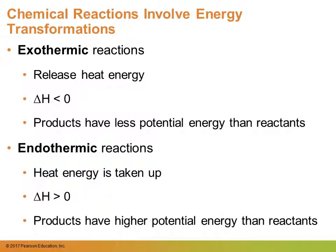That brings us to two types of chemical transformations: exothermic and endothermic reactions. Exo means to exit and thermic means heat, so an exothermic reaction releases heat. When it releases heat, delta H decreases — it becomes less than zero, or negative — indicating a loss of potential energy. On the other hand, endothermic: endo means in, so heat energy is taken up. Delta H becomes greater than zero — it's positive — and this shows that the products have a higher potential energy than the reactants. You must know this for your upcoming test.